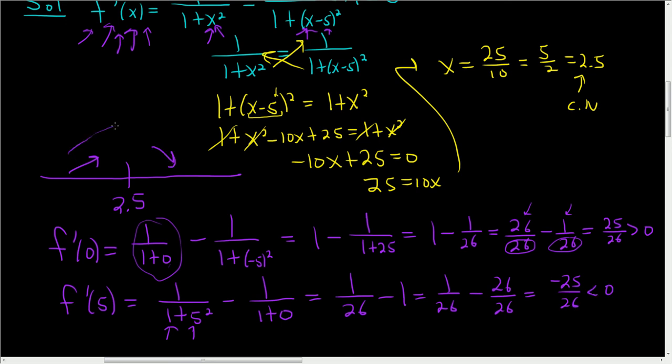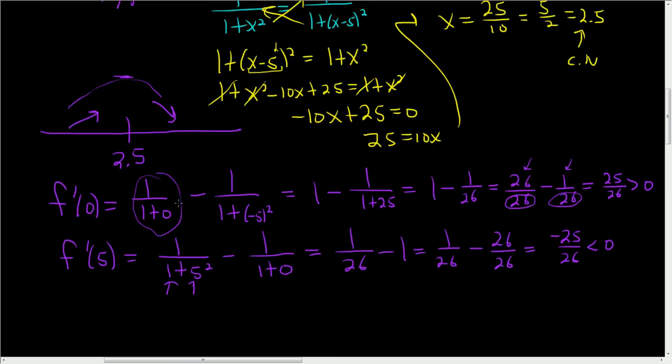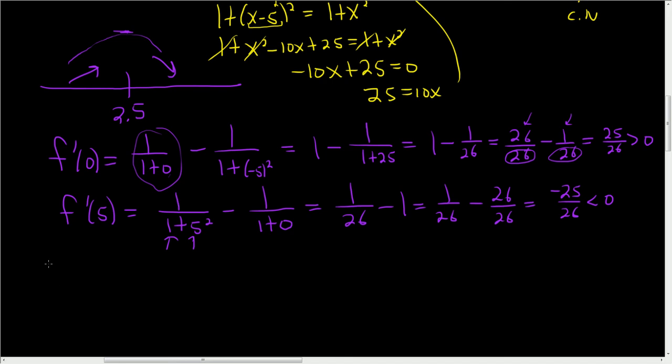So it's increasing, then decreasing. We have a maximum at 2.5 by the first derivative test. So a max at x equals 2.5.